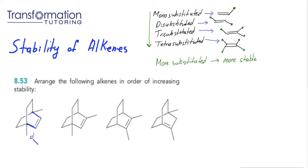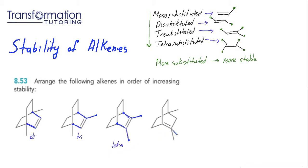It has two direct attachments, therefore it is disubstituted. The next one has the double bond directly attached to one, two, and three carbons, so it is trisubstituted. The following one is directly attached to one, two, three, and four carbons — therefore it is tetrasubstituted. The last one also has its double bond directly attached to four carbons, so it is tetrasubstituted as well.